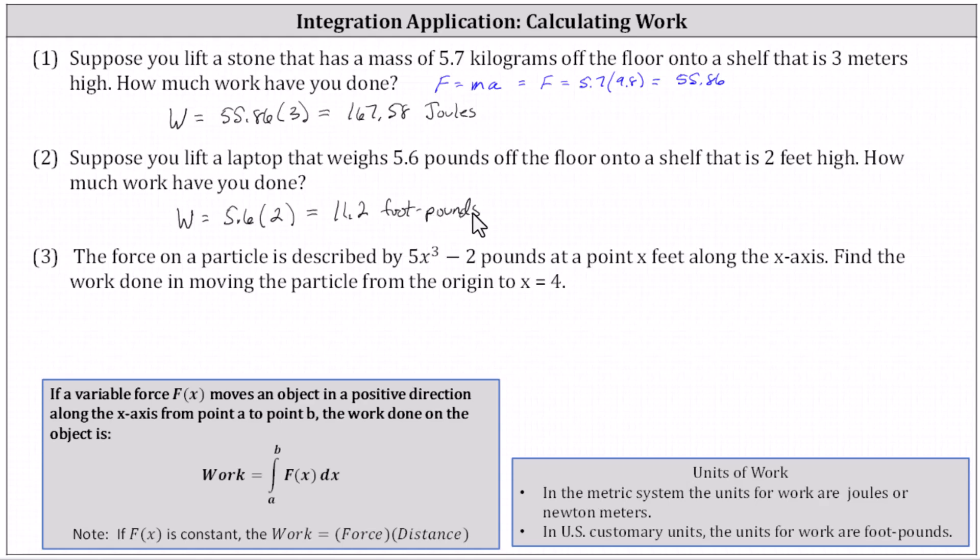And then finally, for number three, the force of a particle is described by 5x³ - 2 pounds at a point x feet along the x-axis. Find the work done in moving the particle from the origin to x equals four. Notice here, we do have a variable force of 5x³ - 2,